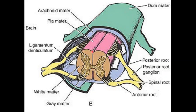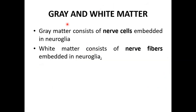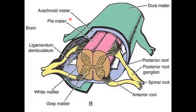In the spinal cord there is gray matter and white matter. In the center is the H-shaped tissue which is the gray matter, and surrounding it is the white matter. The gray matter consists of nerve cell bodies, while the white matter consists of nerve fibers.